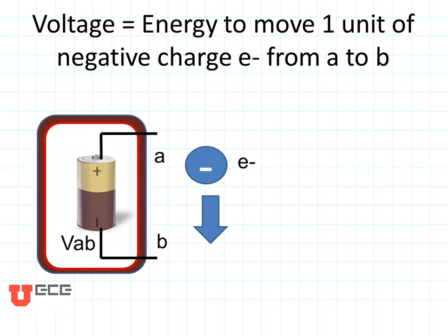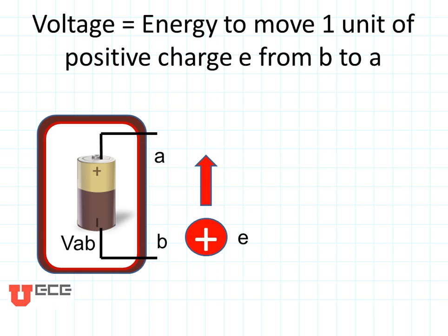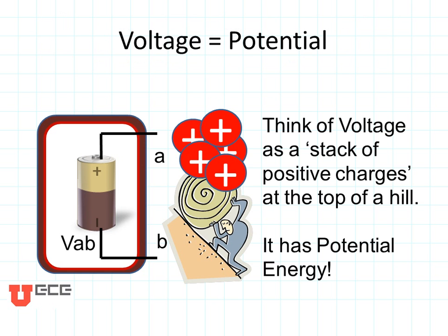Voltage is the energy required to move one unit of negative charge, E minus, from point A to point B. Another way to think of this is it's the same energy required to lift one unit of positive charge, E, from point B to point A. Voltage is equal to potential. Think of the voltage as a stack of positive charges at the top of the hill at point A — this has potential energy.